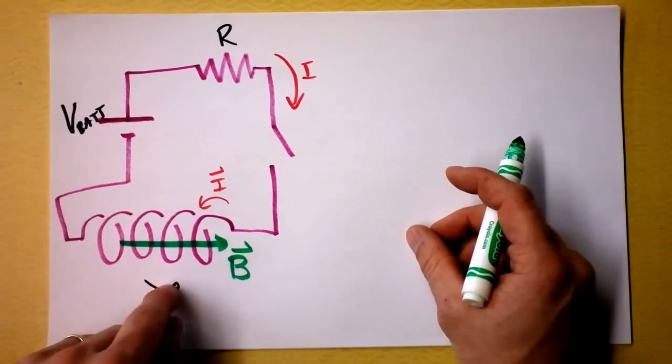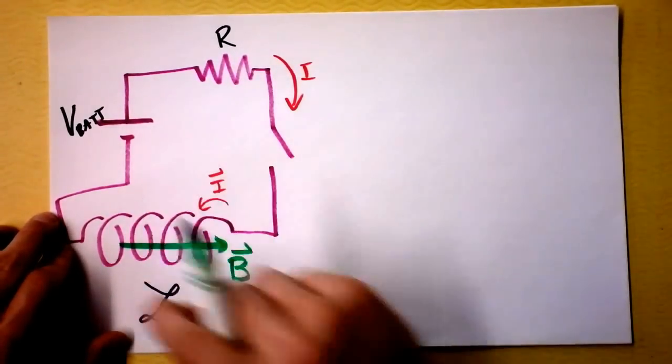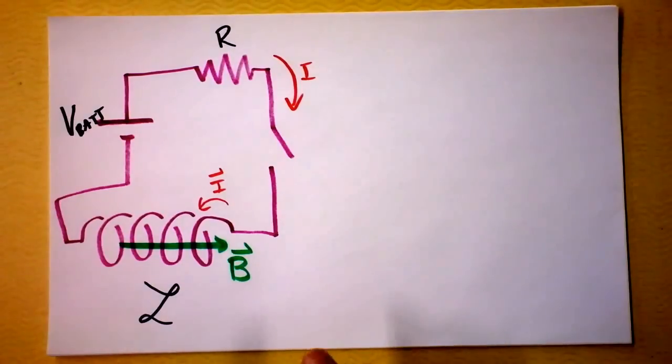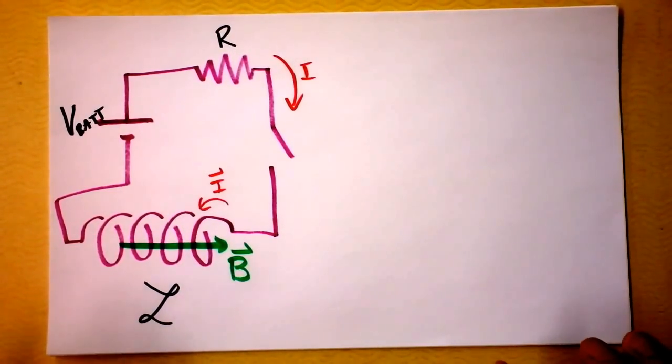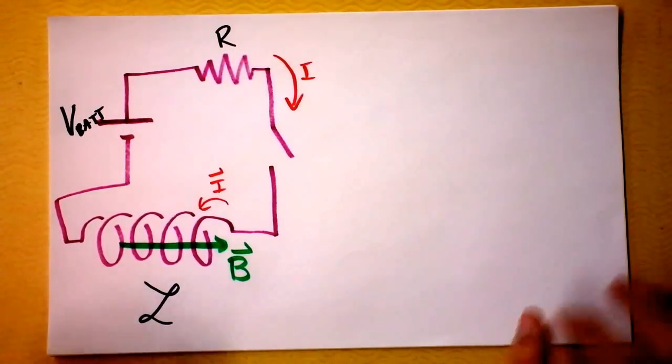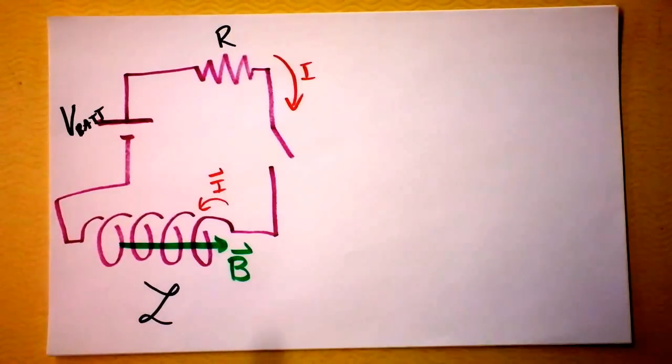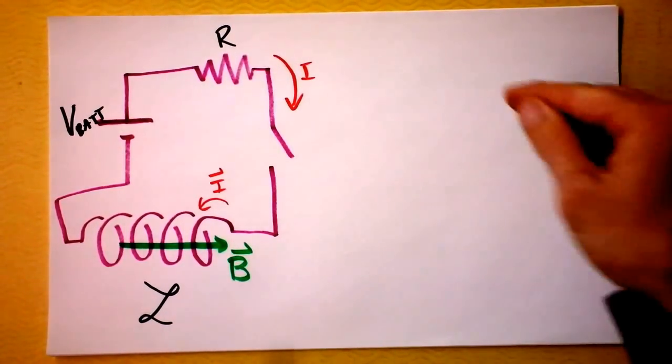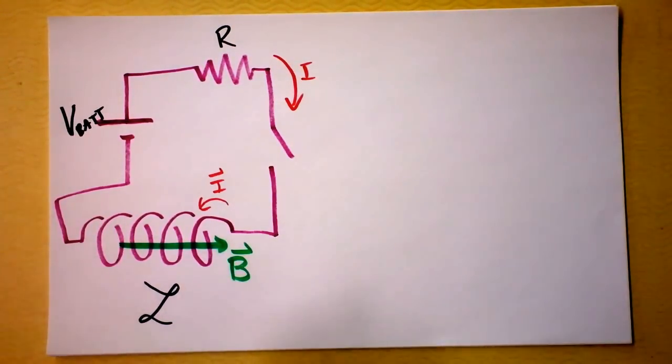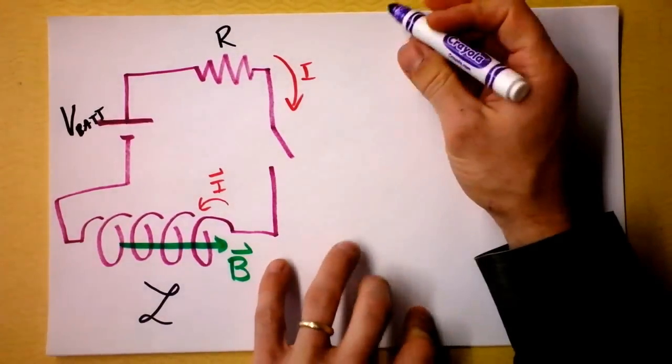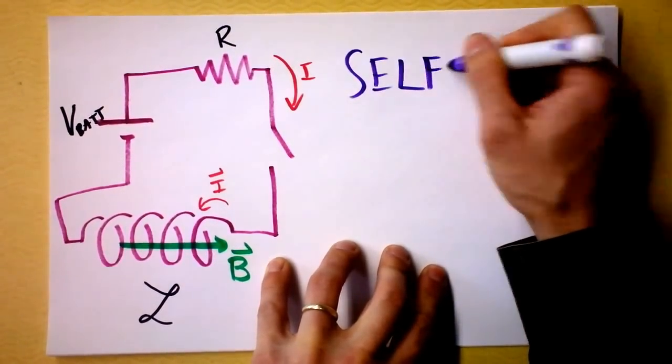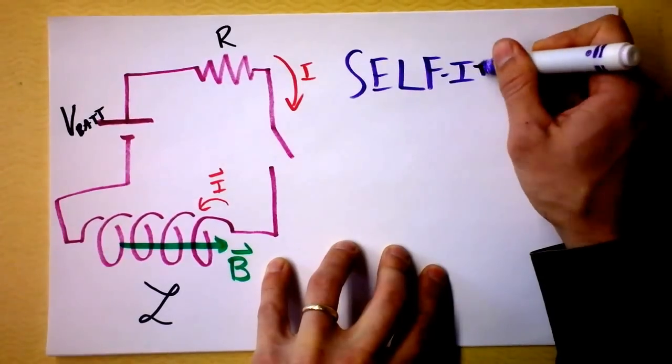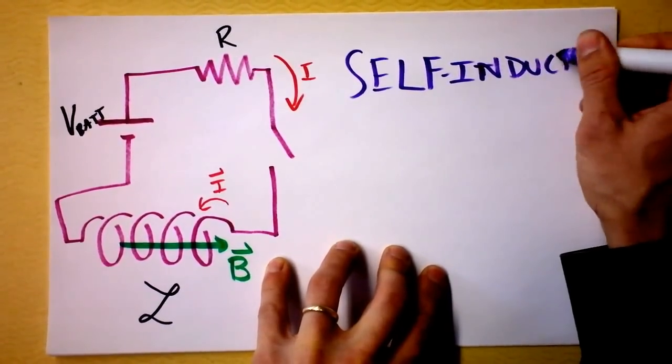Do you think that this loop appreciates the fact that the field through it is getting bigger and bigger? This is a little bit subtle because the loop itself is creating the field. So the loop is changing the field, but at the same time, the loop doesn't want to change the field. So this is a rather complicated arguing with itself, and I'll define it to be self-inductance.